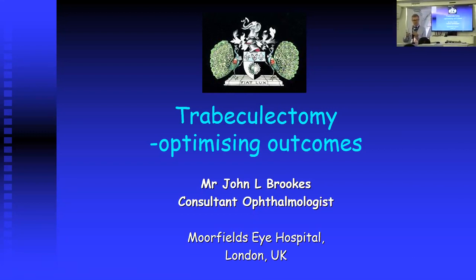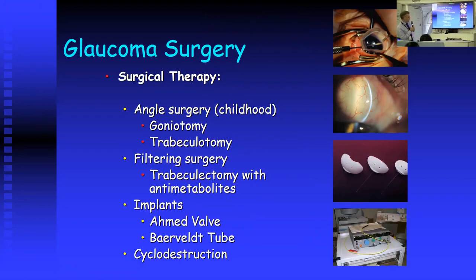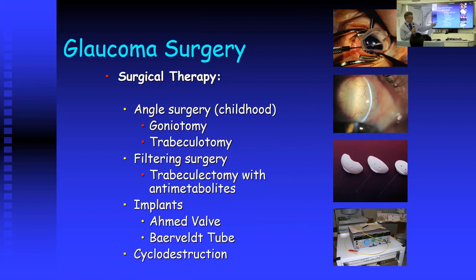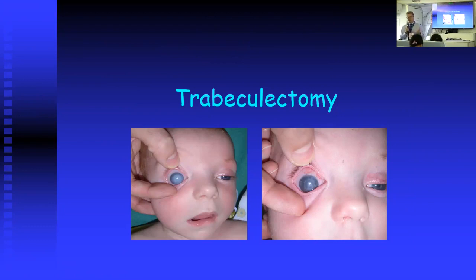This is the whole range of glaucoma surgery available to us. In children with childhood glaucoma we have angle surgery — either goniotomy or trabeculotomy. Filtering surgery is the trabeculectomy we'll talk about, usually with anti-metabolites. Later in the week we're going to talk about glaucoma drainage implants, which are usually reserved for people with failed trabeculectomy or certain types of secondary glaucomas. We'll also talk about cyclodestruction and cyclodiode laser.